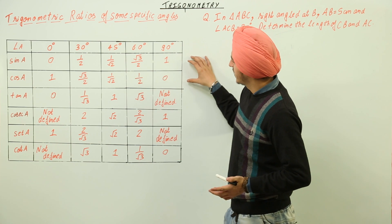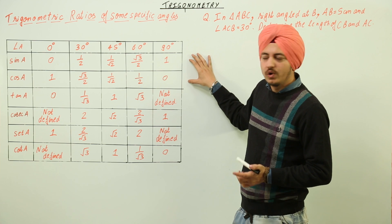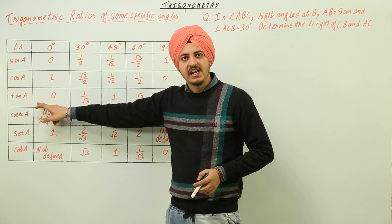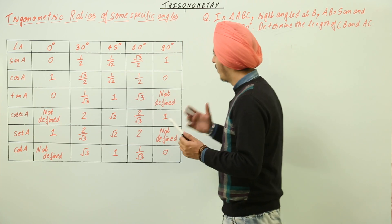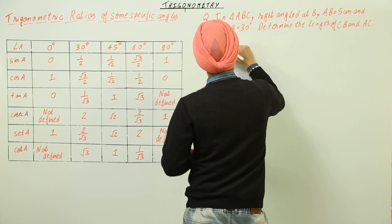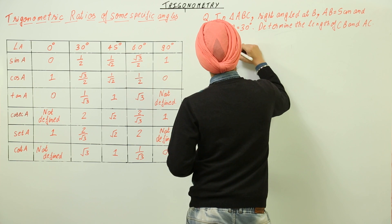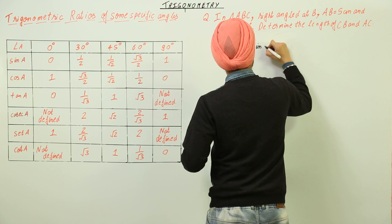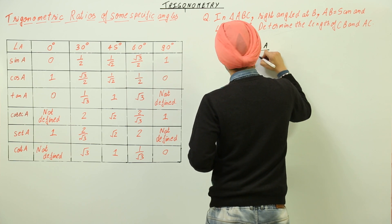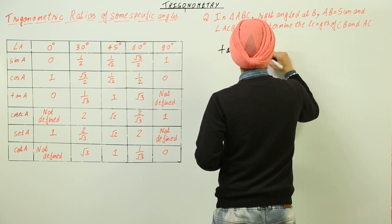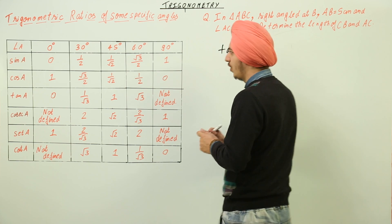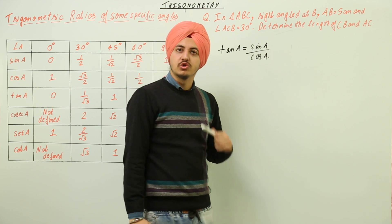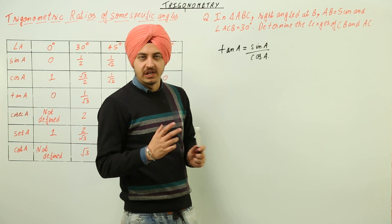Once you have gotten the values of the first two lines, the third line — that is tangent of A — can be derived. One important thing you should know is that tan A is always equal to sin A divided by cos A.